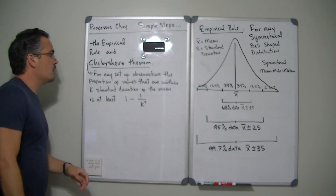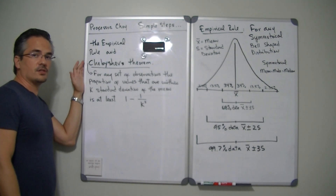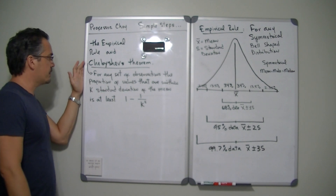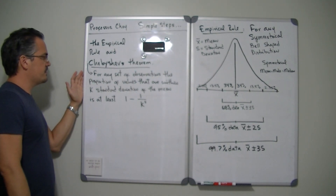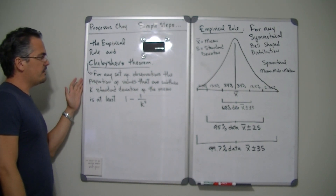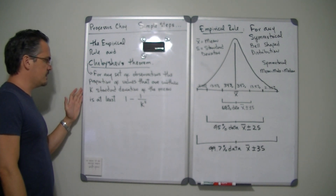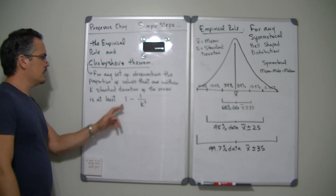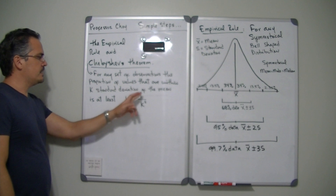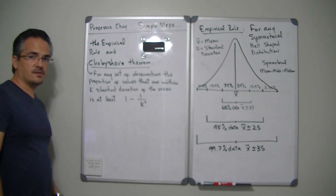According to Chebyshev and something called the Chebyshev theorem, for any set of observations, the proportion of values that are within k standard deviations of the mean is at least 1 minus 1 divided by k squared.